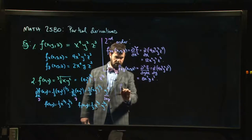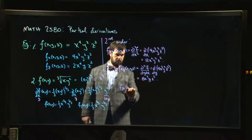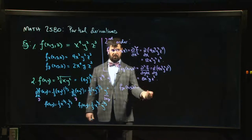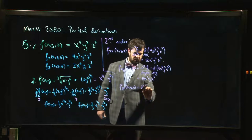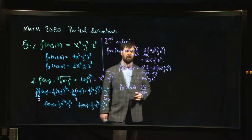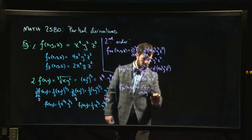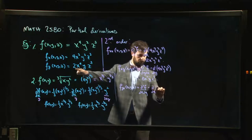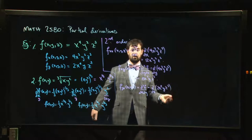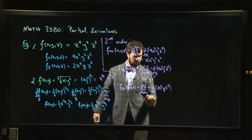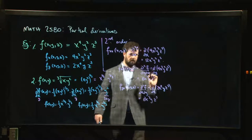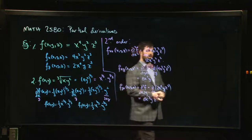On the other hand, you could compute f_yx of (x,y,z). Here the y is closest, so you do y first and then x. In Leibniz notation, you're doing y and then x. So you first take the y derivative and then take the derivative of that with respect to x, and that also gives you 8x³yz³.